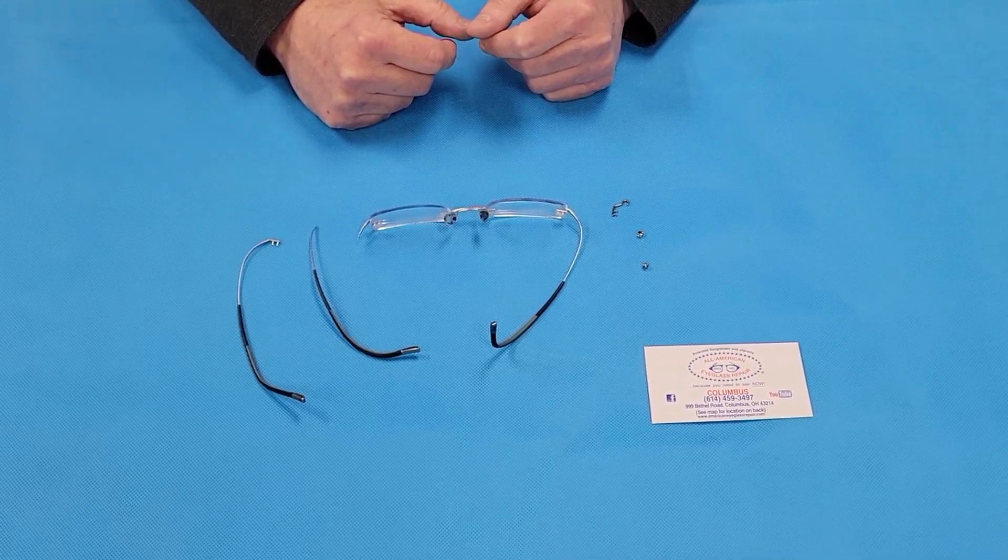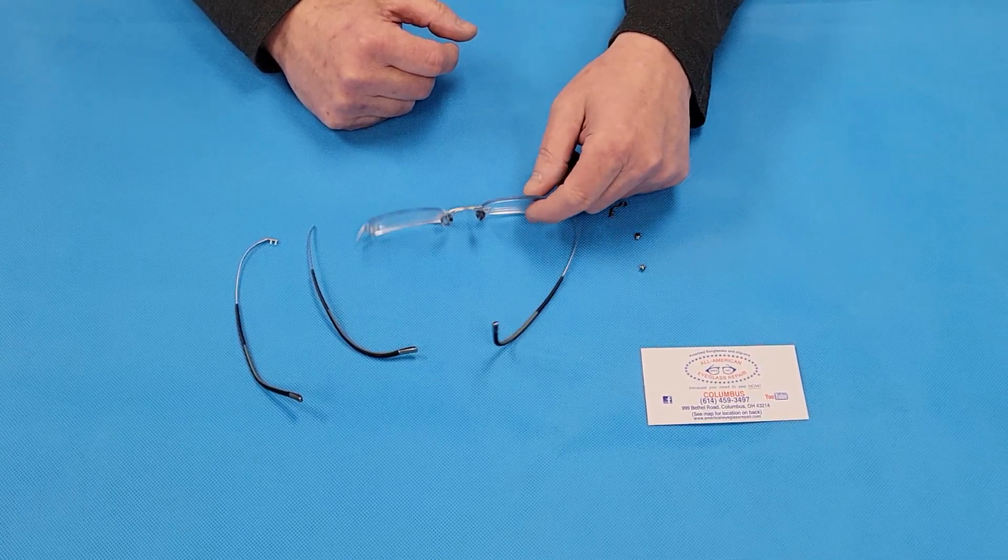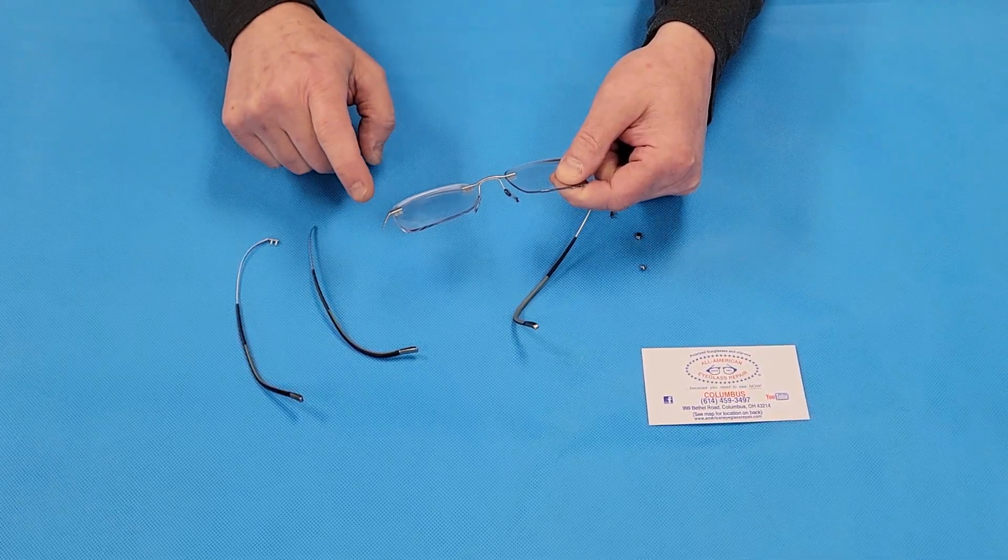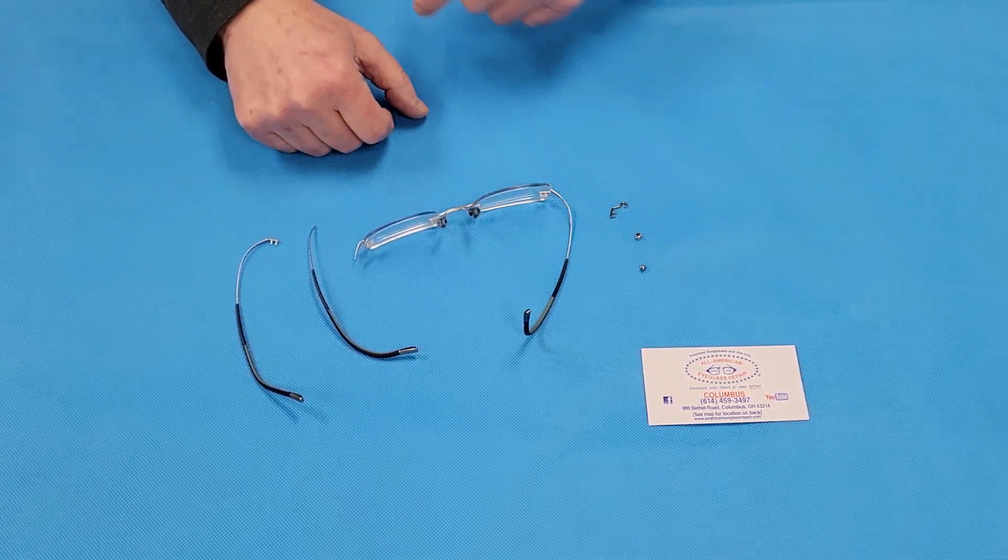Hi, this is Rick with All American Eyeglass Repair and I want to talk about Silhouette Eyeglasses. The Silhouette Eyeglasses, these are the three-piece drill mounts. You'll notice there's one, two, three pieces that are drilled in, and the metal pieces go into the lens there.